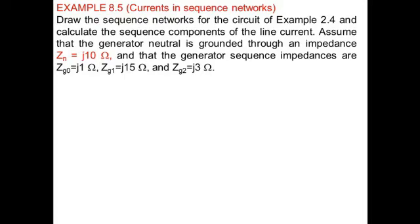In this part of the lecture, we are going to solve two examples related to sequence component calculation. This example we have already solved in Chapter 2. But here we have to calculate the sequence component of the line current, using that same data. The assumptions are: the neutral impedance Zn is J10, the zero sequence impedance is J1, the positive sequence impedance is J15, and the negative sequence impedance is J3.